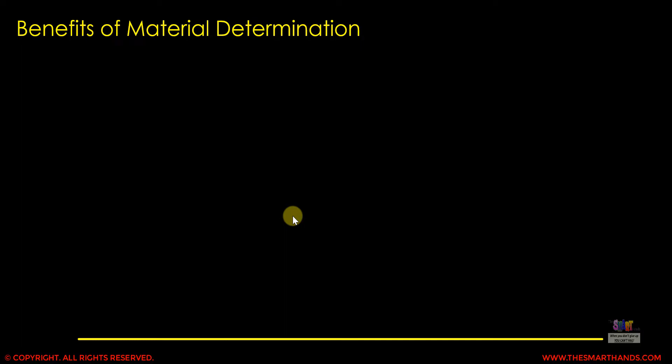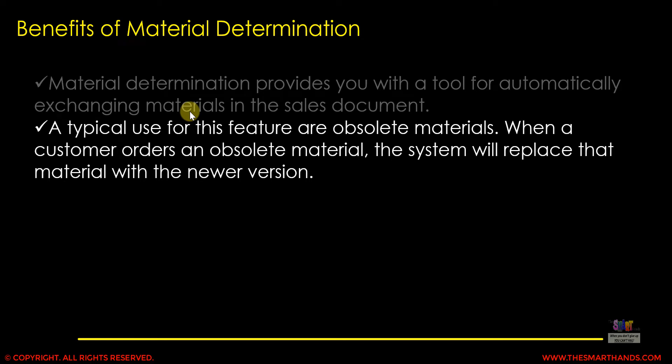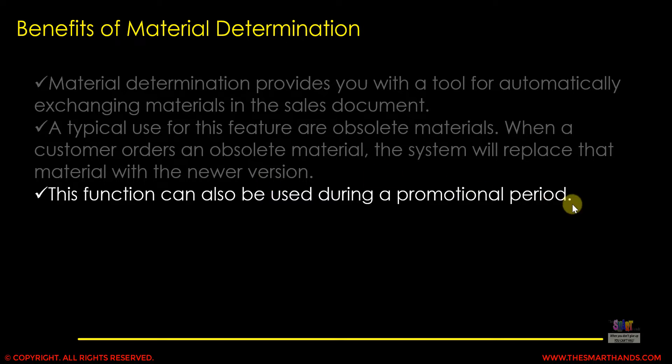Material determination provides a tool for automatically exchanging materials in the sales document. Most of the time it's used for automatic determination, but manual is also available. A typical use case is obsolete materials — when a customer orders an obsolete material, the system replaces it with the newer version. It can also be used during a promotional period, for example during Christmas time, replacing a material with a special packaged version for one or two months.